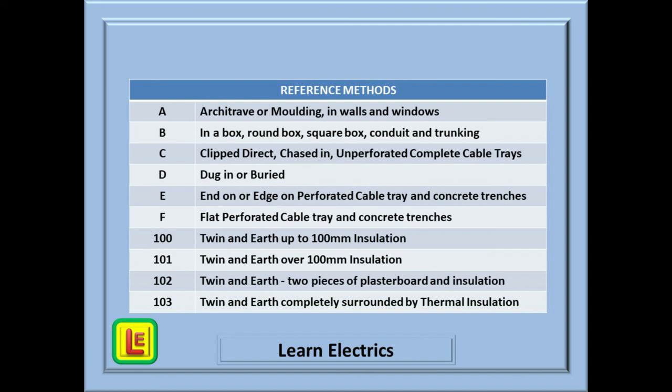And there we have it. Our 10 simple reference methods. A for architrave or in building materials, walls and window frames. B for round box or square box in conduit or trunking. C is clipped direct to the wall or chased into the wall, or for non-perforated complete cable trays. D was for dug in, buried in the ground. E was for the perforated cable tray, on end or on edge. And F was for flat perforated cable tray. Remember that concrete trenches are also E and F. When we looked at twin and earth cables, we used 100 for loft insulation up to 100 millimeters thick. 101 was for insulation over 100 millimeters. 102 saw two sides of plasterboard. And 103 was our worst case where the cable is completely surrounded by thermal insulation.